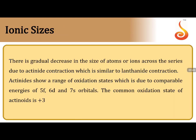Similar to lanthanide contraction, actinide contraction occurs: increasing atomic number decreases size across the actinides. Actinides show a wider variety of oxidation states than lanthanides because of comparable energies of 5f, 6d, and 7s orbitals. Actinides also show complex-forming ability and exhibit predominant actinide contraction compared to lanthanide contraction. This completes the concept of D block and F block elements.